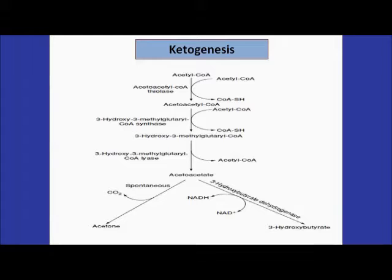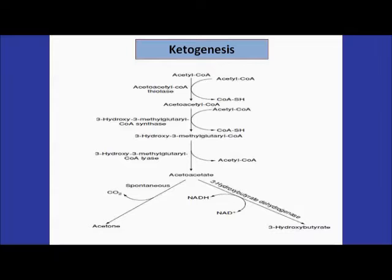Acetone is largely excreted via the lungs, so acetone breath can be considered a crude method for diagnosing an individual suffering from untreated type 1 diabetes mellitus. To summarize the pathway: two acetyl-CoA molecules form acetoacetyl-CoA, then HMG-CoA forms, and finally acetoacetate yields either acetone or beta-hydroxybutyrate.